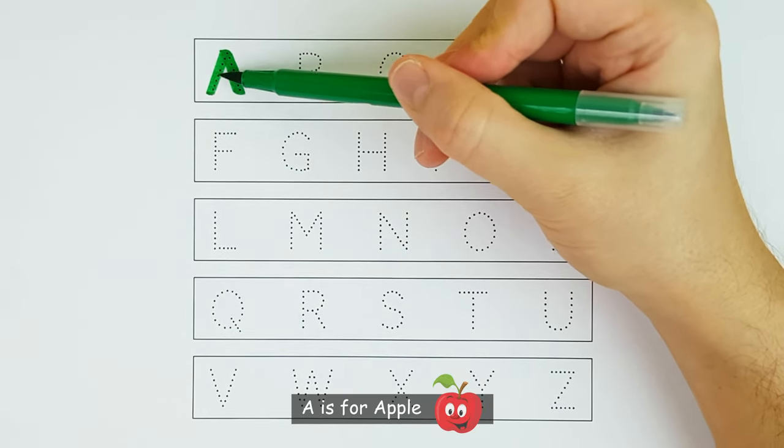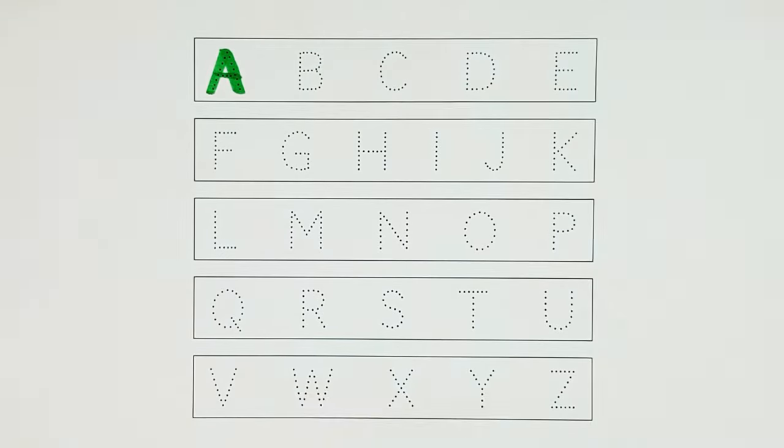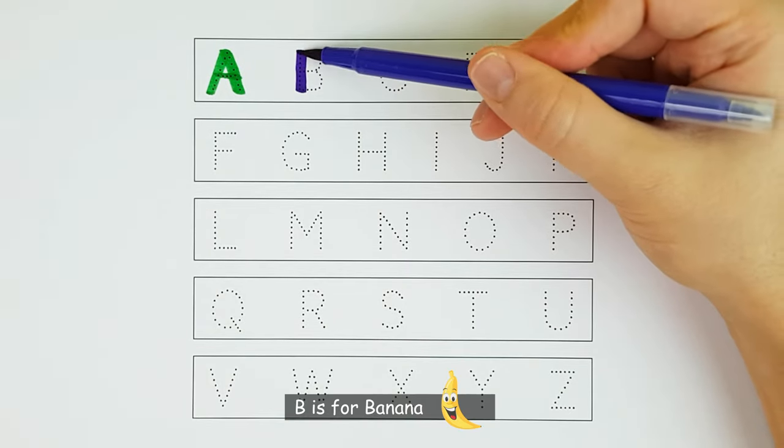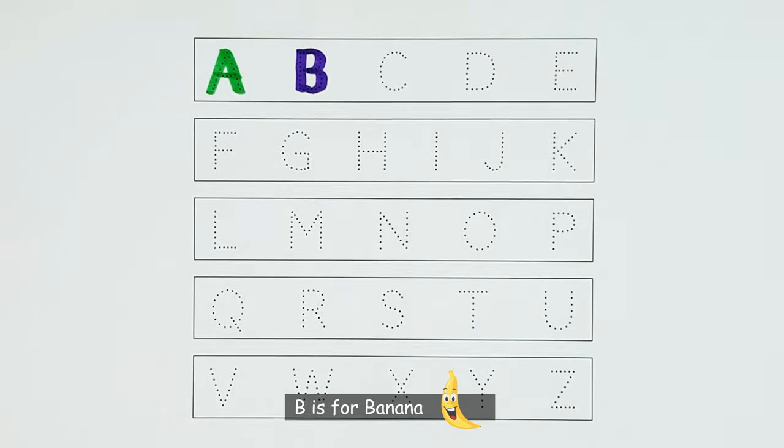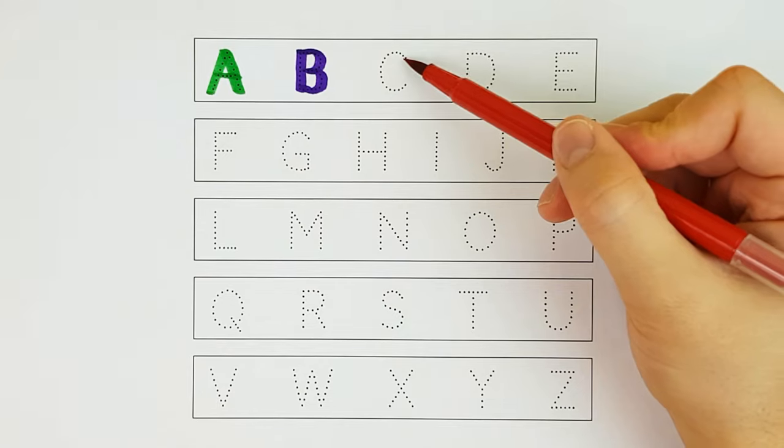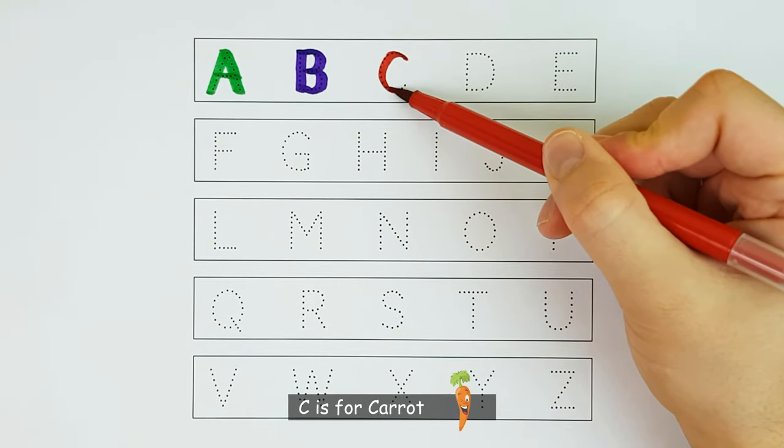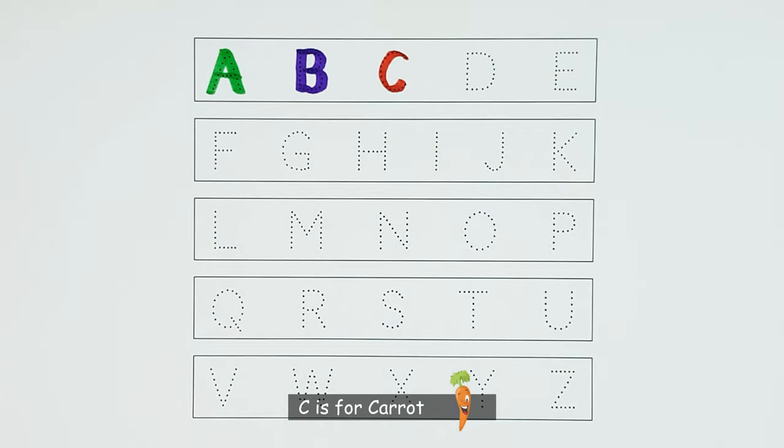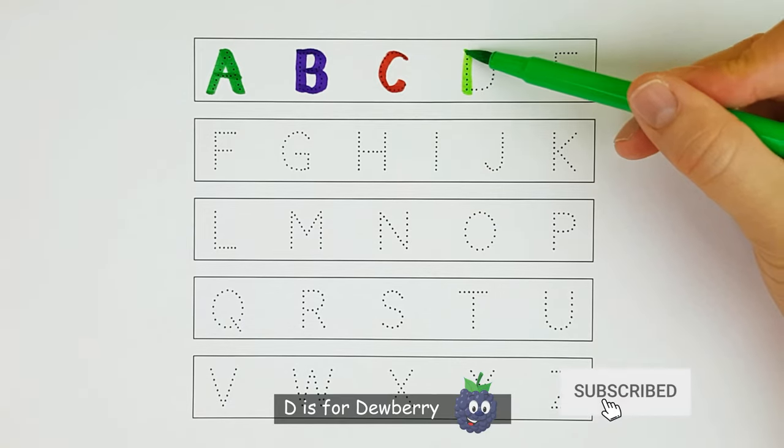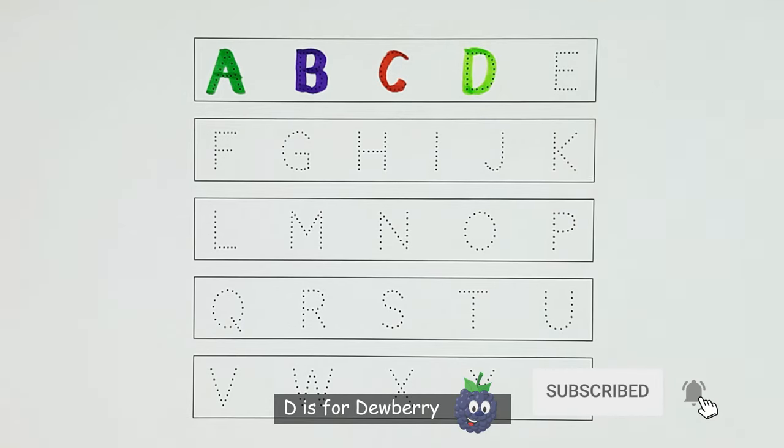A. A is for apple. A. B. B is for banana. B. C. C is for carrot. C. D. D is for dewberry. D.